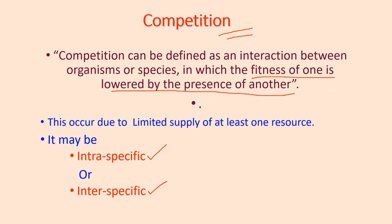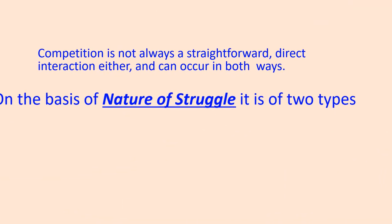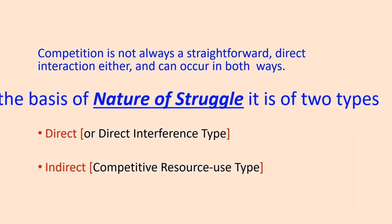Intraspecific means competition between individuals of the same species, and interspecific means between individuals of two different species of the same trophic level. On the basis of the nature of struggle, competition is of two types: one is direct or interference type, and the other is indirect or competitive resource use type. In direct interference competition, members of two different populations are mutually and actively inhibitory to each other. In indirect competition, each population inhibits the other indirectly for a resource in short supply.